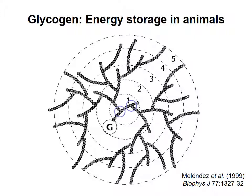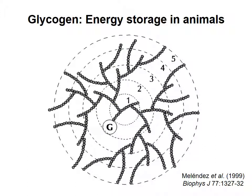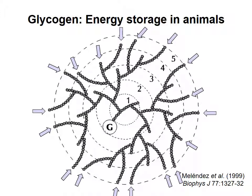The first chain has two alpha-1,6 branch points where new chains of about 13 monomers begin. The pattern continues, forming up to about 12 shells or layers of glucose chains. Only the first five shells are shown. All of these glucose units form one large polysaccharide molecule. Glucose monomers are removed from glycogen when the amount of sugar available to cells becomes low. The monomers are removed starting from the ends of the chains on the outside of the glycogen polymer. The structure of glycogen makes many such ends available, allowing rapid release of many glucose monomers from storage.